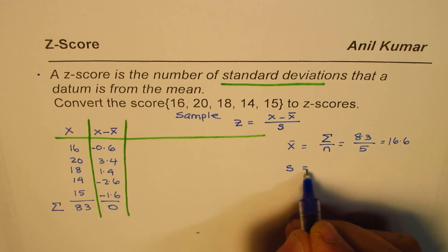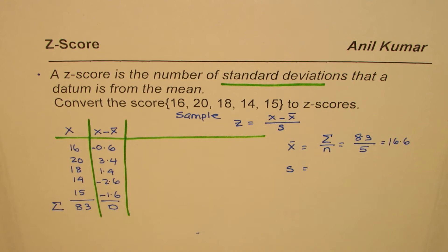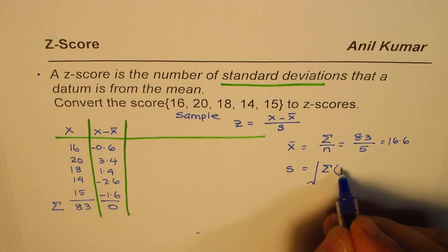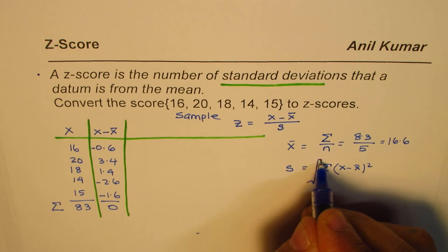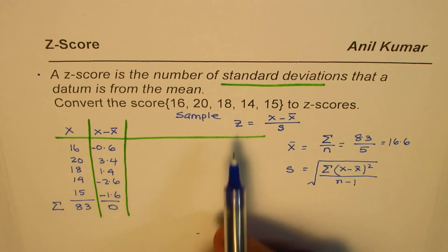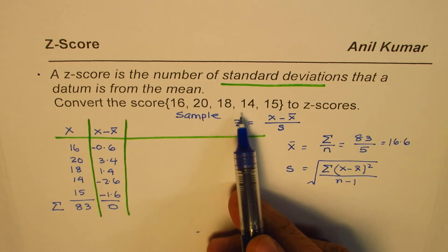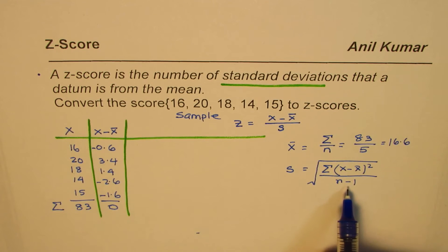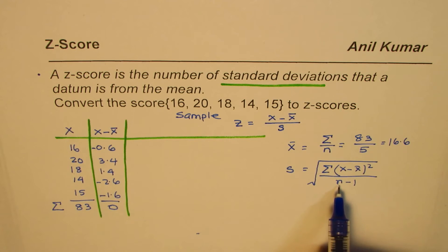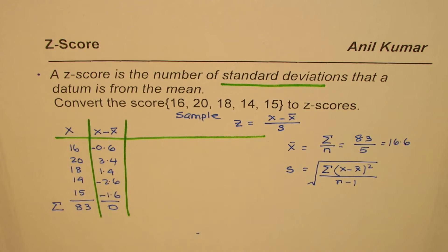Now, how do you find the standard deviation? Since we are treating this as a sample, the formula is the square root of the sum of squared differences (x minus x-bar) squared, divided by n minus 1. We use n minus 1 rather than n because a small sample tends to underestimate the full deviation, so dividing by n minus 1 compensates for that. For a population you would use n, but for a sample it is n minus 1.